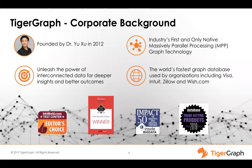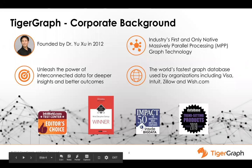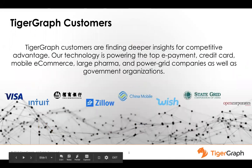TigerGraph was started by Dr. Yushu in 2012. It was the industry's first and only native parallel, massively parallel processing graph technology — a native graph database that is highly parallel and massively scalable. We came out of stealth in 2017, and since then the company has been growing. We have doubled in size, and our customer base has grown many-fold, including companies like Intuit, Zillow, and Wish.